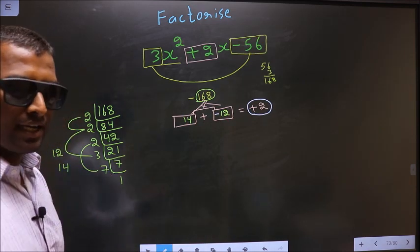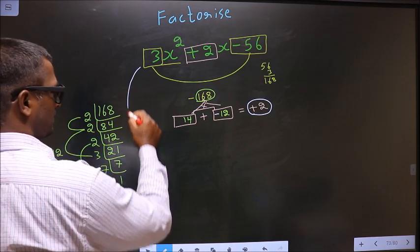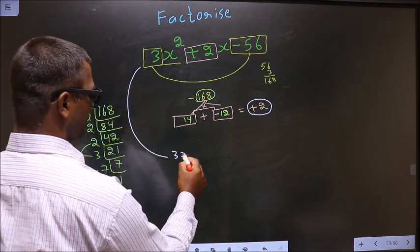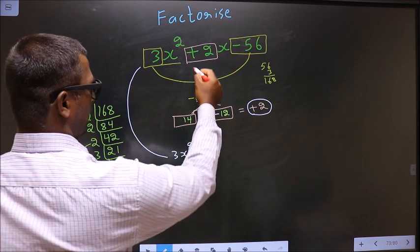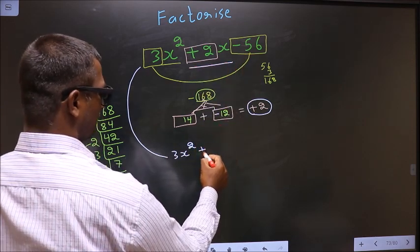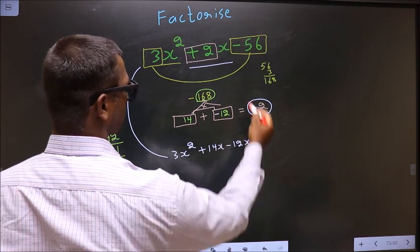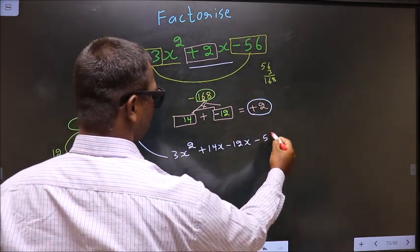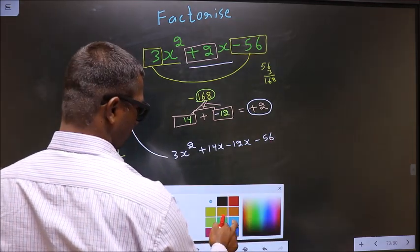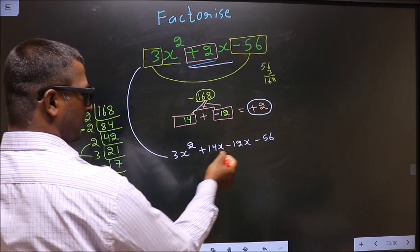Now we change the 2x term. In place of 2x, we write +14x - 12x. So the expression becomes 3x² + 14x - 12x - 56. Am I clear? In place of 2x, I have written 14x - 12x.